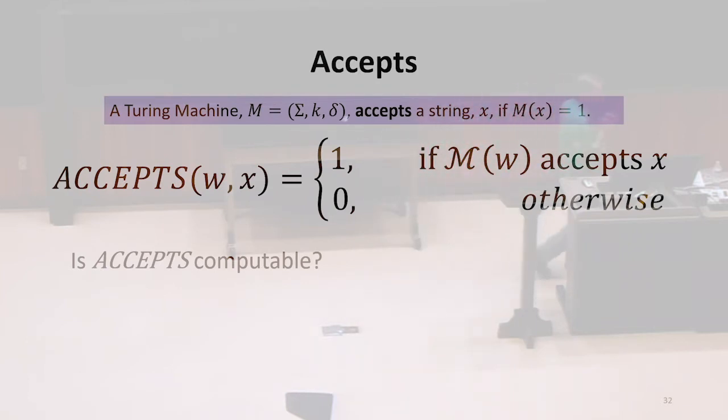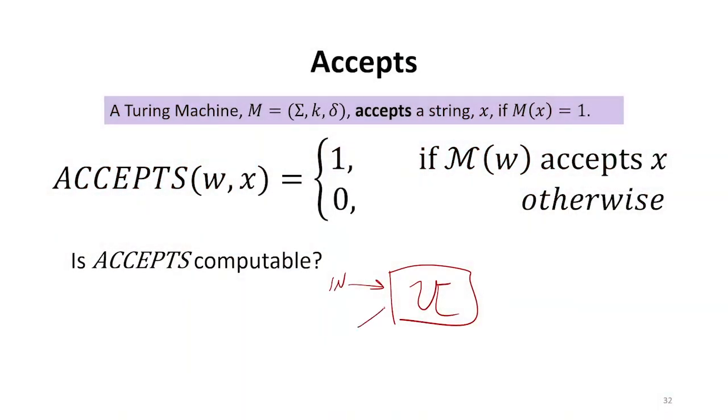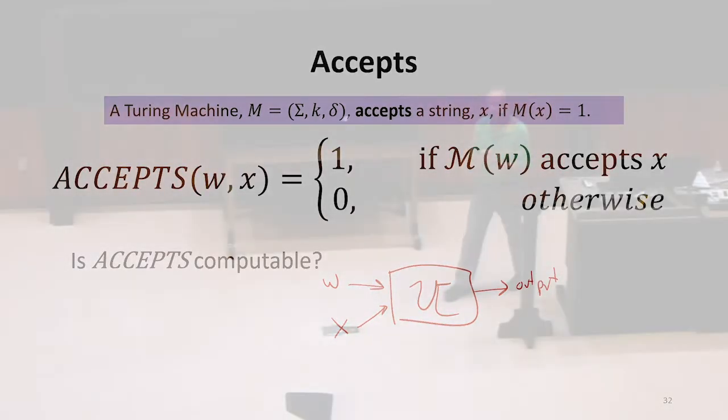Well, could we build a machine? Remember, we just said we can build a universal Turing machine that can simulate any machine. So, a natural way to think about implementing accepts would be to do that. So, we're going to take our universal machine, we're going to feed in w, we're going to feed in x, and we're going to take its output, and that's going to be the output. Is that going to work? That seems like we've just designed a Turing machine that can compute this function.